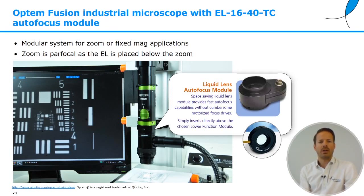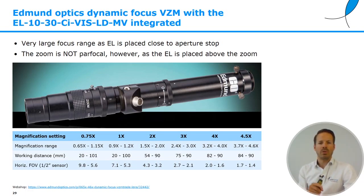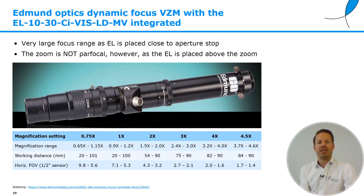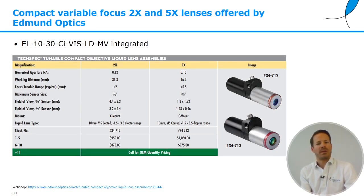A similar system from Keyoptic, the Optem Fusion, also has an autofocus module with the EL16 designed in. Edmund Optics has a variable zoom lens with an EL10-30 integrated above the zoom, which means this system is not parfocal — after zooming you will usually have to refocus. It provides magnifications of 0.75 to 4.5x. Edmund Optics also has compact 2x and 5x lenses with the EL10-30 integrated in the middle — very useful for a compact portable system that doesn't need zoom, and fairly well-priced, making it a good solution for OEMs, though a bit less versatile than the modular solutions.